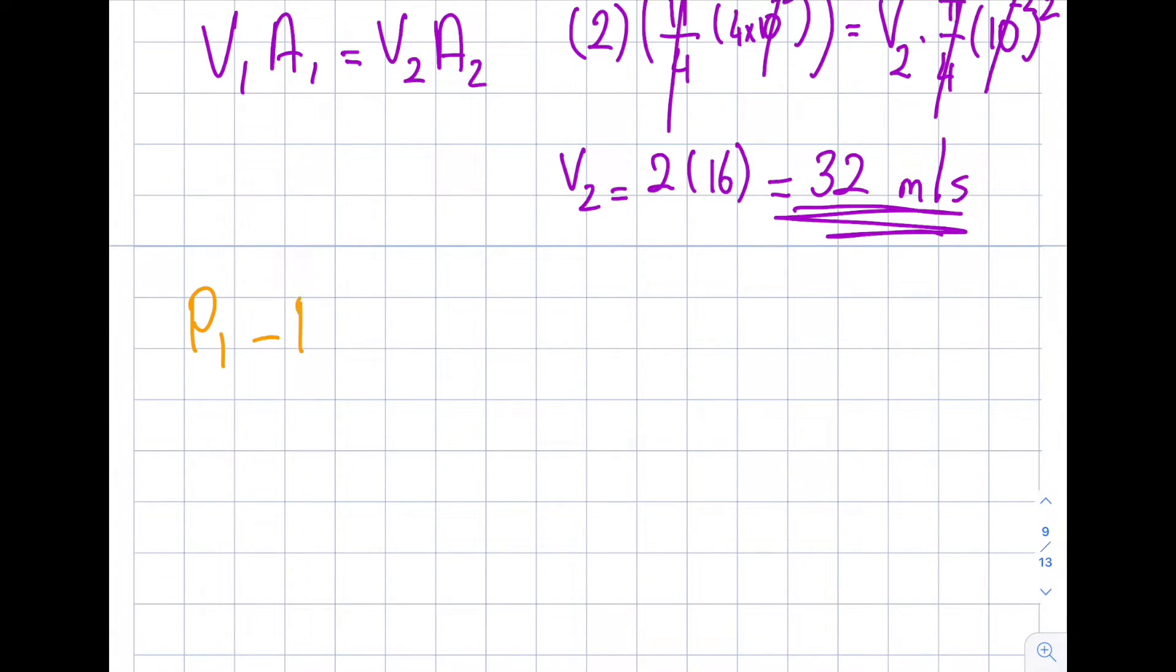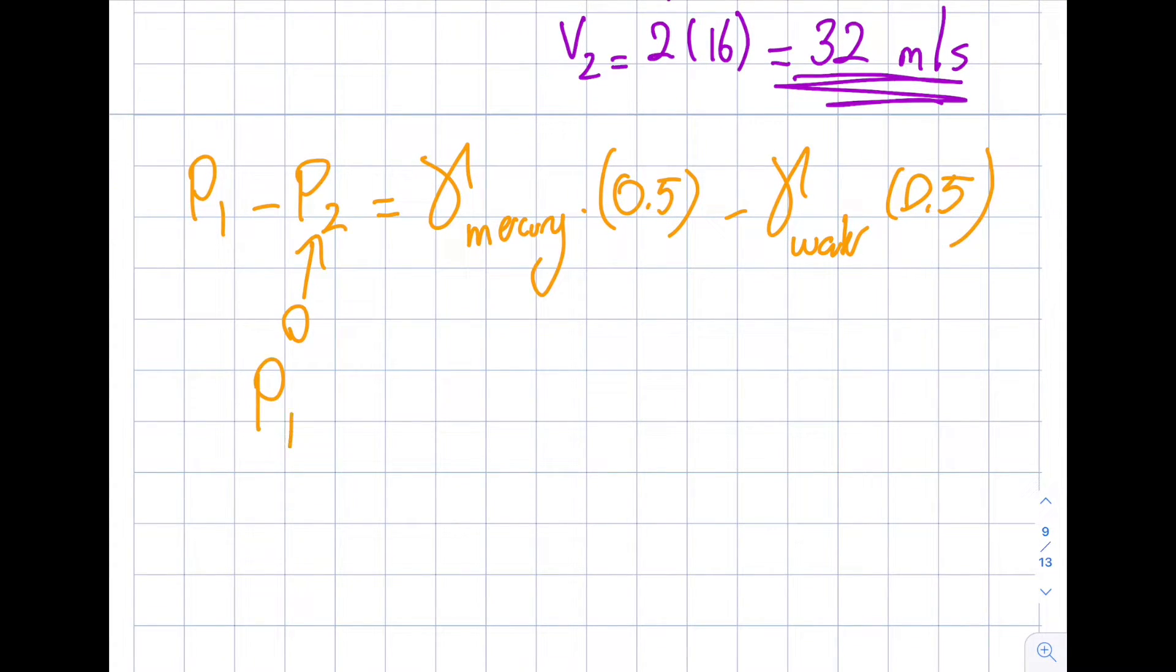P1 minus P2, and the P2 is 0 in this particular case, is going to be specific weight of the mercury, because I'm going down, times 0.5 meter is how much I'm going down, minus specific weight of the water times 0.5 as well, because the same height that I go up.